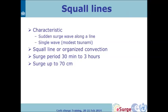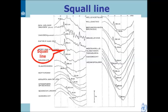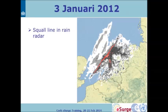What generates squall lines is a cold front, or organized convection can also cause these types of lines. The surge periods can be 30 minutes to three hours, with amplitudes up to 70 centimeters. Here you see one of these systems coming in, with peaks of 40, 30, and 60 centimeters reaching the coast. The squall line shows up very clearly in the rain radar, which covers this area.